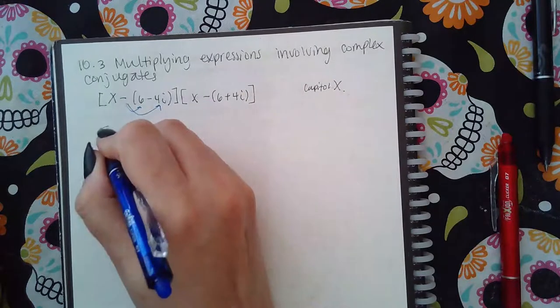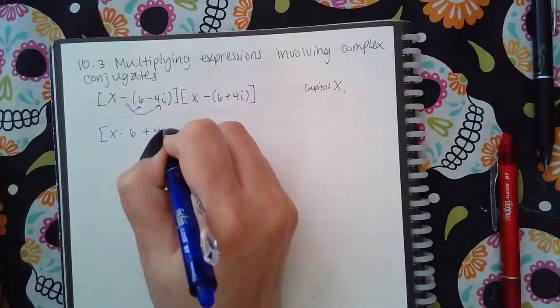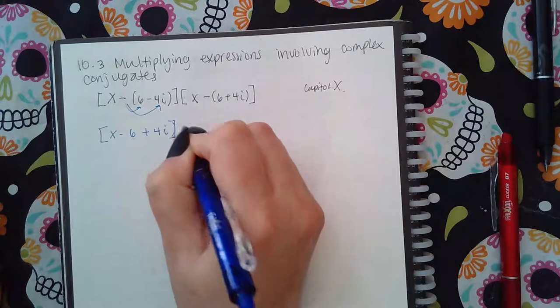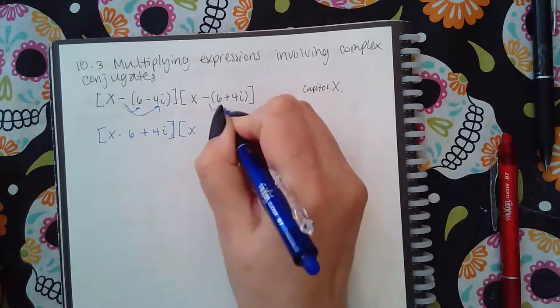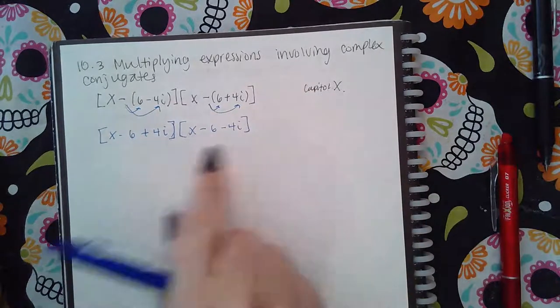Next thing is you want to distribute the signs in the inside these factors before you continue any further, and then it's just a matter of foiling everything out.